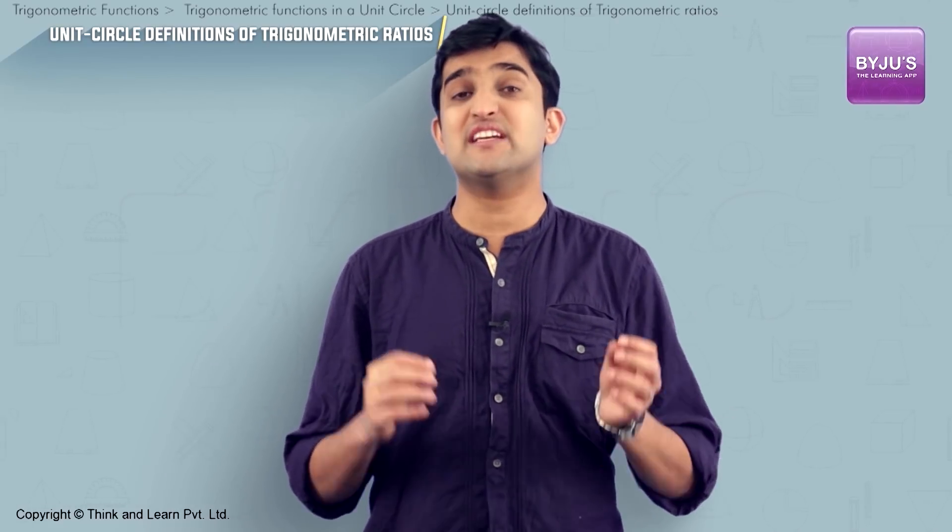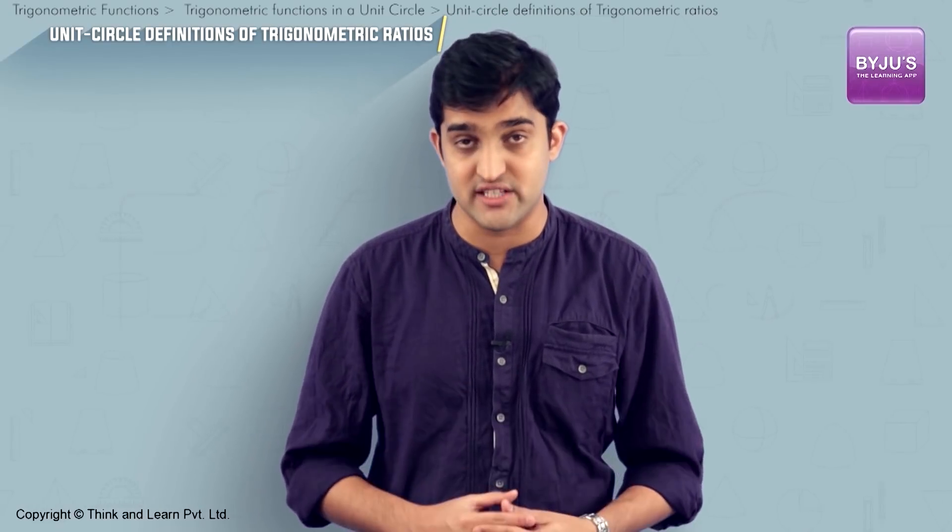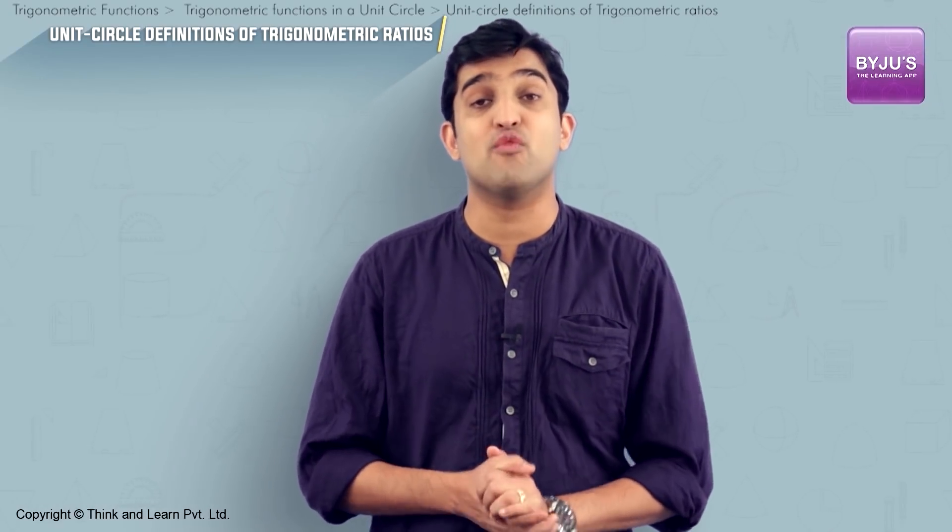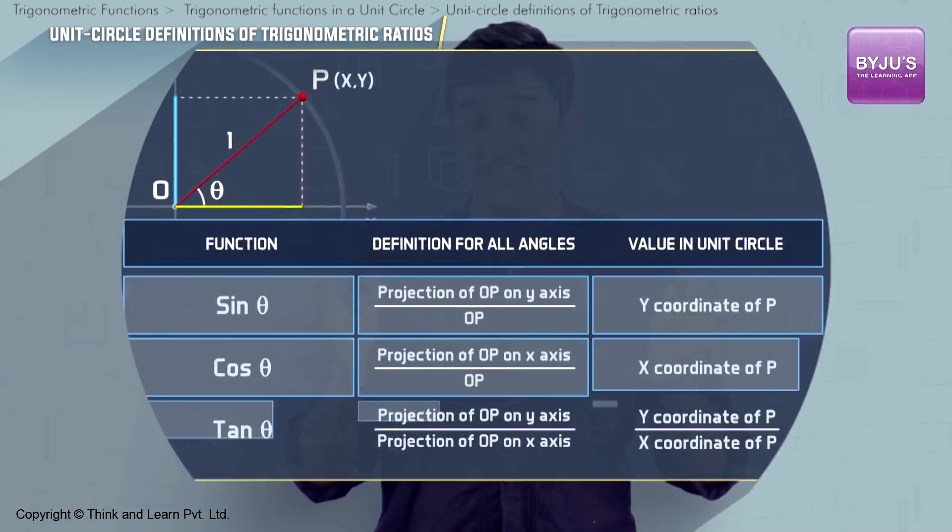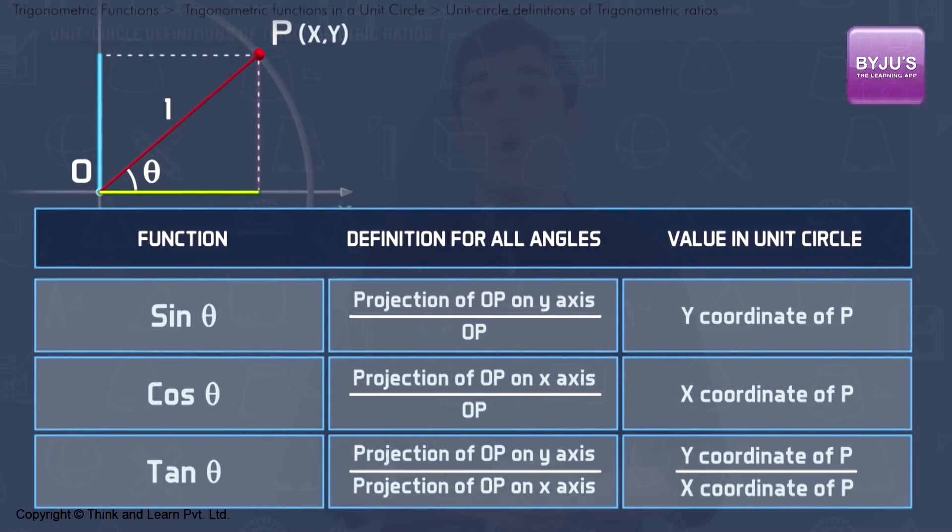So this way, using a circle with the center at origin, we have defined trigonometric ratios for all angles. All these definitions are summarized on your screen now.